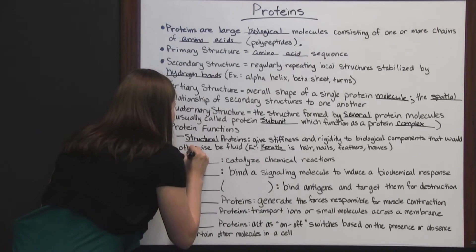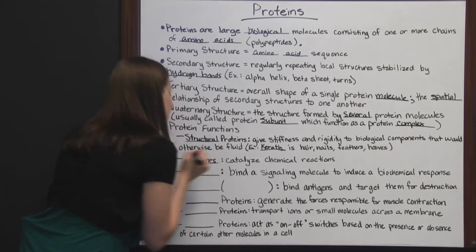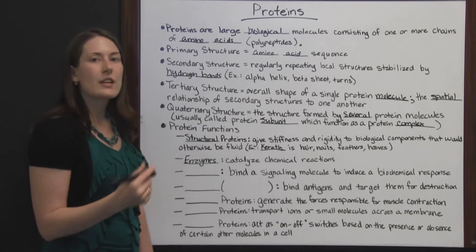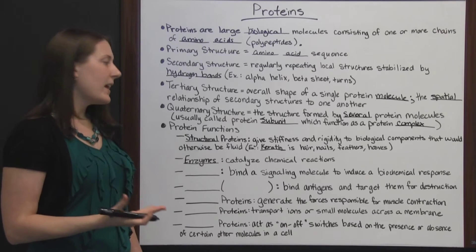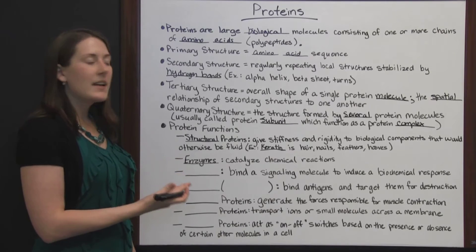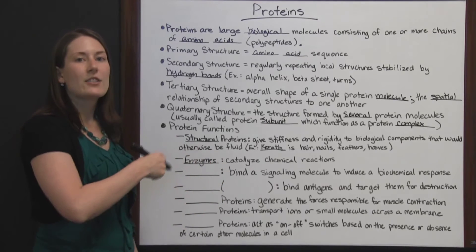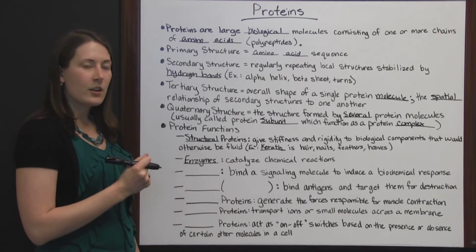Next, we have enzymes. Enzymes catalyze chemical reactions. There's a chemical reaction that needs to take place, but it won't be able to take place until this enzyme is present. When the enzyme is present, it catalyzes the chemical reaction and speeds it up and lets it occur.